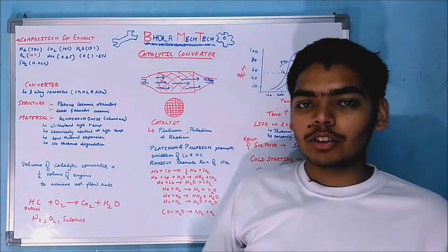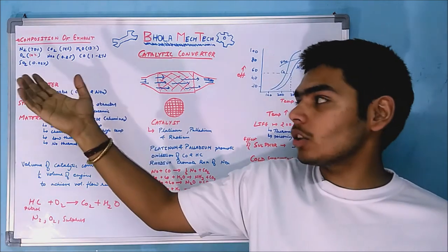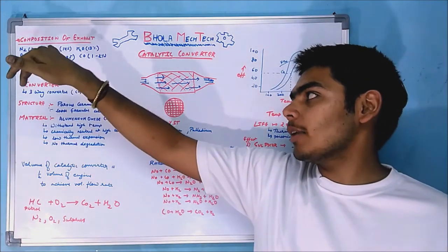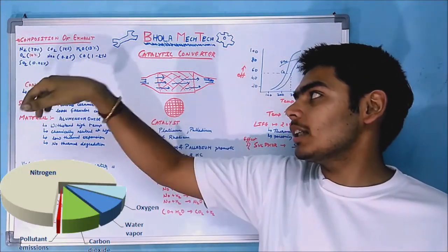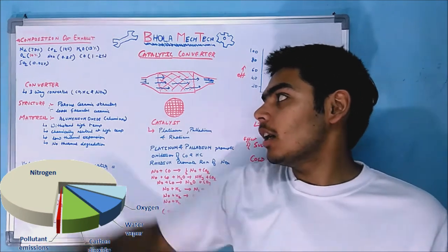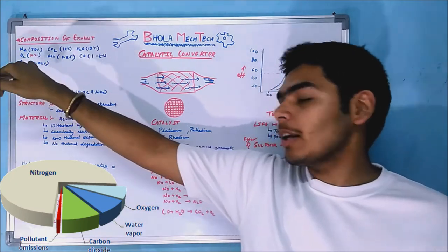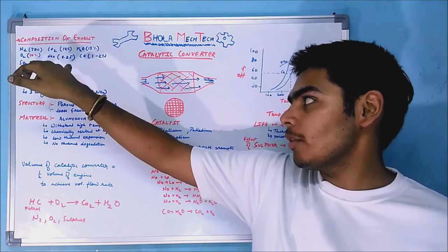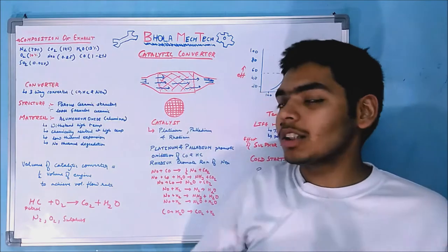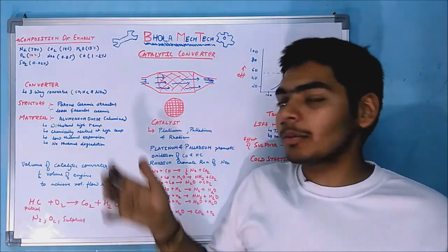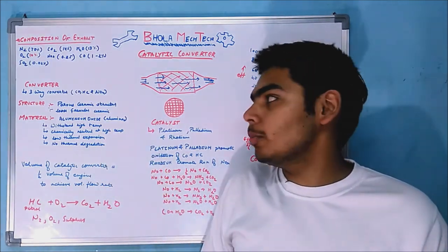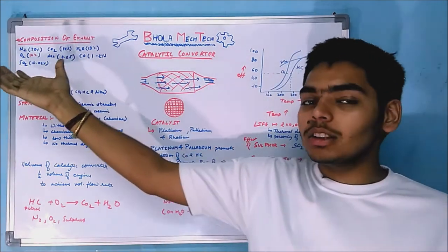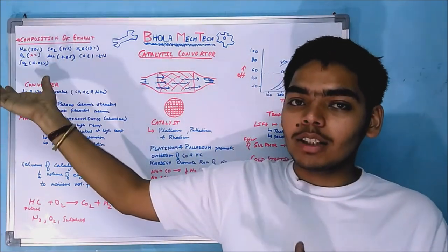Let's start with the catalytic converter. First, the composition of exhaust gases: nitrogen is about 70%, carbon dioxide is 14%, and water is about 13%. Oxygen is about 10%, which is only in diesel engines. NOx is about 0.25%, carbon monoxide is about 2%, and sulfur dioxide is about 0.02%. These are the compositions of the exhaust gases.